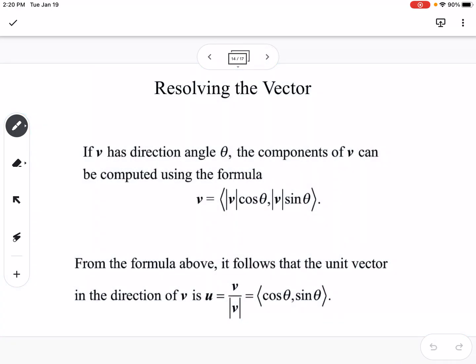Resolving the vector: If you have an angle that you know the vector is, but you don't know the components, you can find the components by taking v = (|v|cos θ, |v|sin θ) to find your x and y components of the vector.